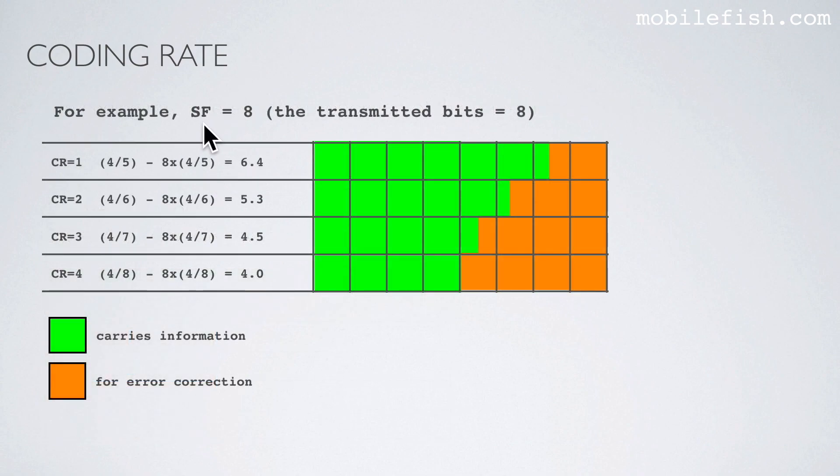Let's assume the spreading factor is 8, which means 8 bits are transmitted. So if the coding rate is 1, then 6.4 bits carry actual information as you can see by this calculation: 8 times 4/5 equals 6.4.